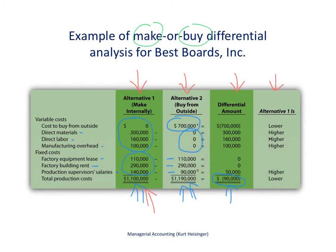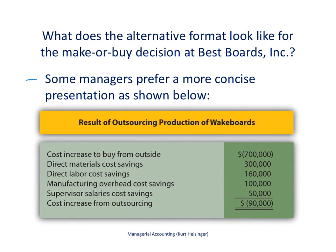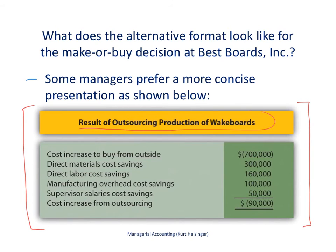The next slide shows a summary version of this analysis, summarizing the information from the differential column. Some managers prefer not to see all the detail — instead they just want to see a summary of the differences between producing wakeboards internally or outsourcing that production.